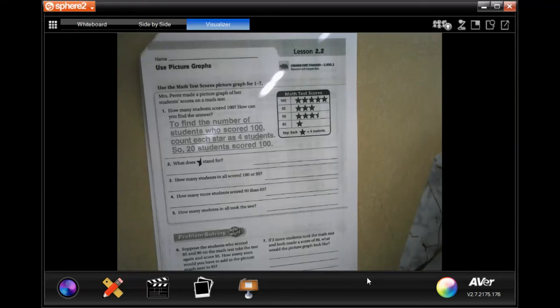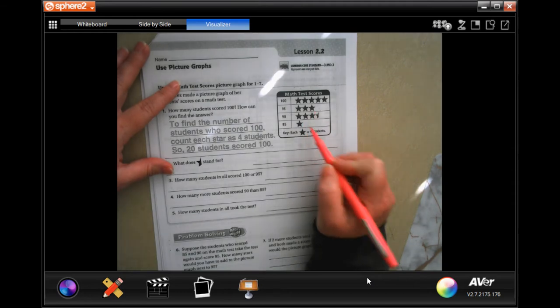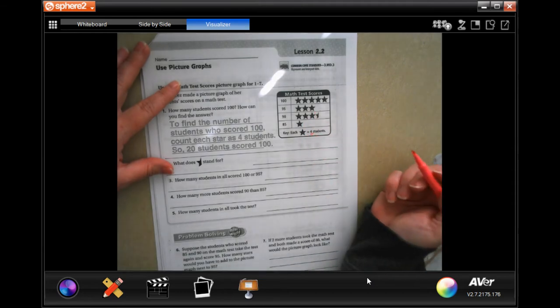Hi guys, welcome to third grade chapter two, lesson two. We're going to go ahead and get started with number two. So it's all about reading graphs. Each one of the stars on this graph is worth four students.